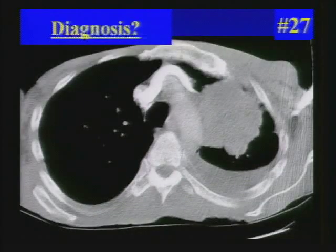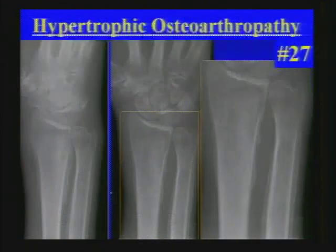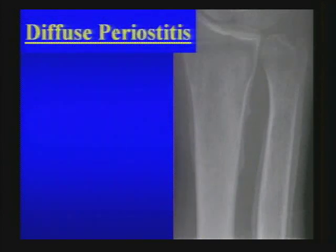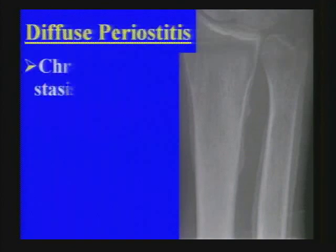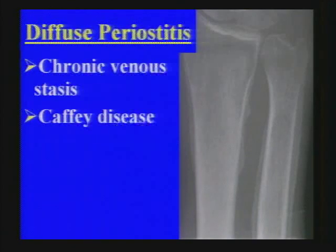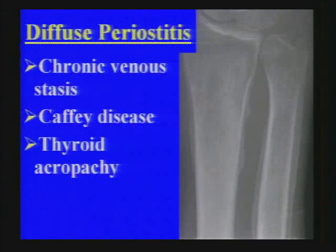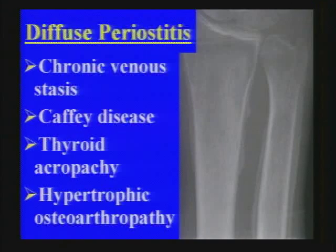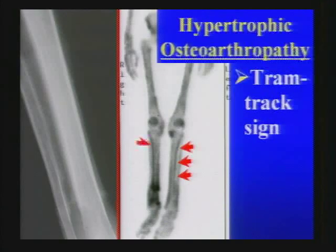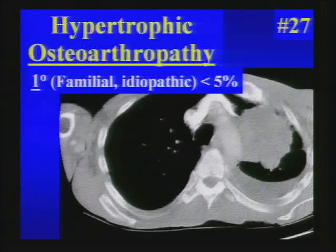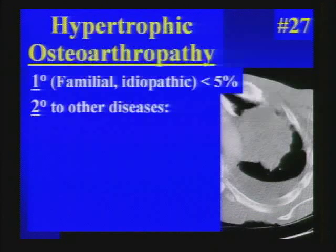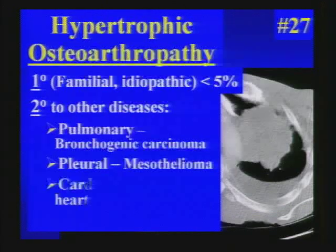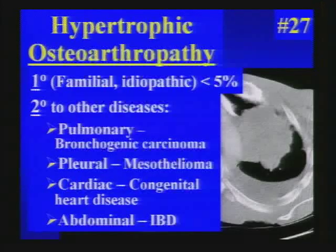Finally, hypertrophic osteoarthropathy — a perennial favorite at boards. Diffuse periostitis can be caused by many conditions: chronic venous stasis in the lower extremities, Caffey's disease in young children, thyroid acropachy in the phalanges of patients treated for hyperparathyroidism. This case is hypertrophic osteoarthropathy. Note the tram-track appearance on both bone scan and radiograph. In rare cases it can be familial or idiopathic, but most commonly it is secondary to pulmonary, pleural, or cardiac/abdominal disease.